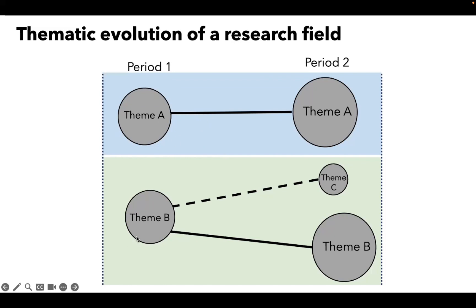You can see theme B evolving into both theme C and theme B. So it might show more publications in the same theme, but it also has strong connections to theme C, although it doesn't have the same name.